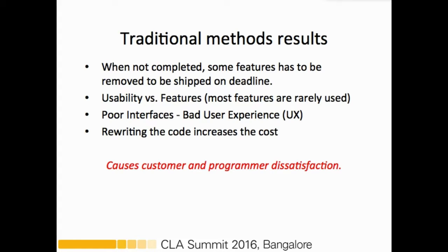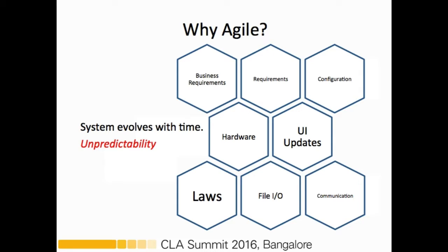This results in issues like poor user interfaces where the user experience will be very bad. Similarly, there will be usability versus features issues — for example, we all rarely use all the features of social networking websites and applications. So why agile? We've already seen the limitations of the traditional method like waterfall. We're going to implement agile because the system can evolve with time, and unpredictability — like changing business requirements — is a key factor.